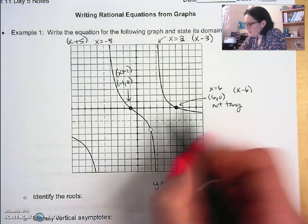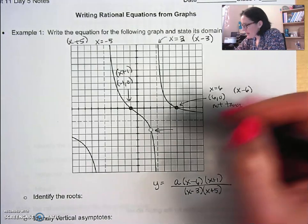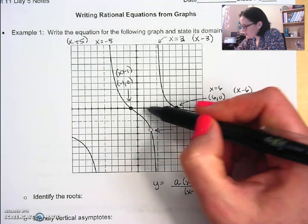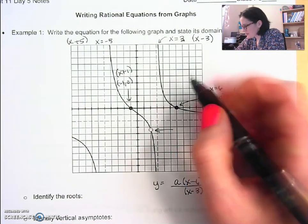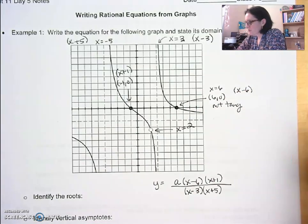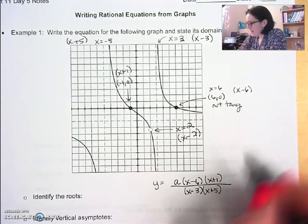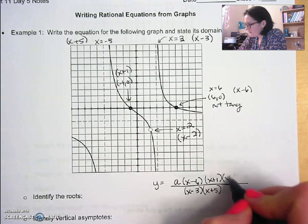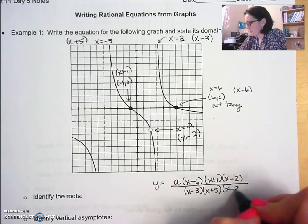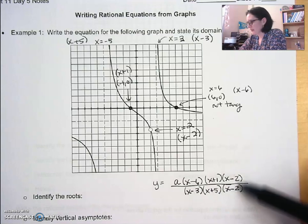Now let's talk about the discontinuity — the hole. The x-value there is x = 2, which comes from the factored form (x − 2). Discontinuities occur when you have a common factor that gets canceled from both the numerator and denominator, so I know I have that factor in both places.